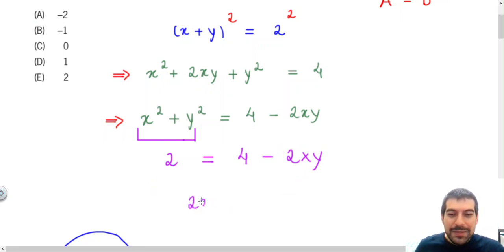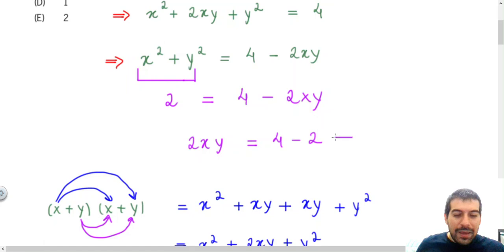and I will leave this 4 here, and I will send this 2 to the right side, so it will be 4 minus 2.